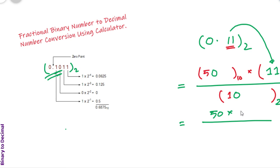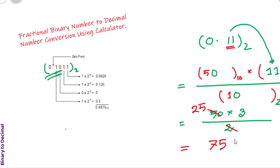The binary 11 produces the decimal value equal to 3, and 10 produces the decimal value of 2. So if we calculate this number, then we get the corresponding decimal number: 3 times 25 produces 75, which is the decimal number. We have to put zero point here, so the binary number 0.11 makes the corresponding decimal number 0.75.